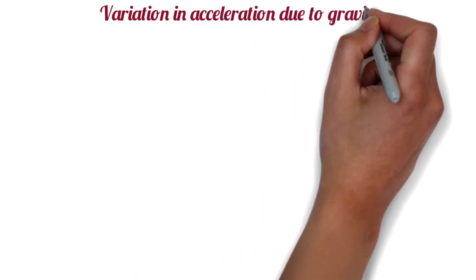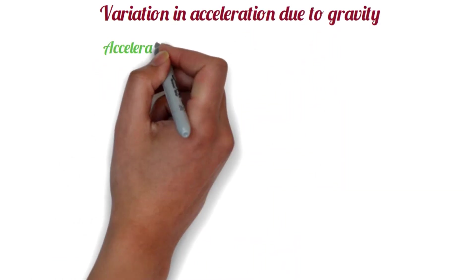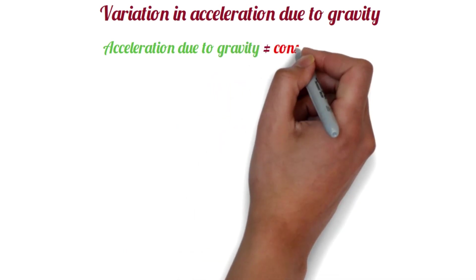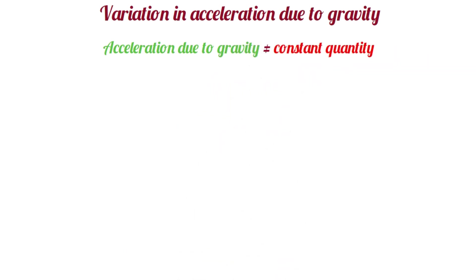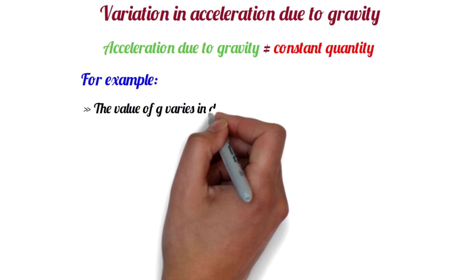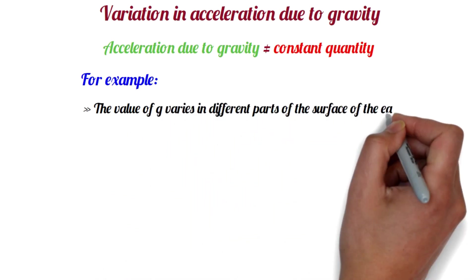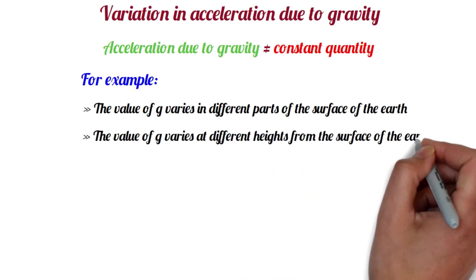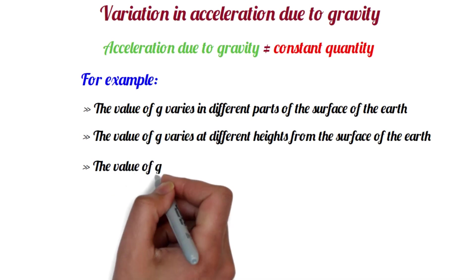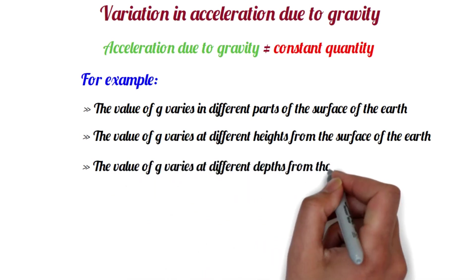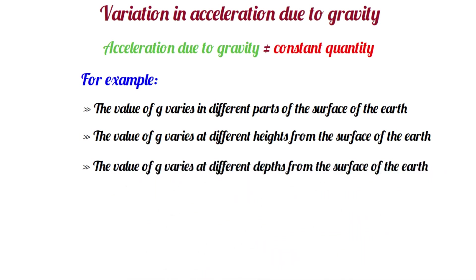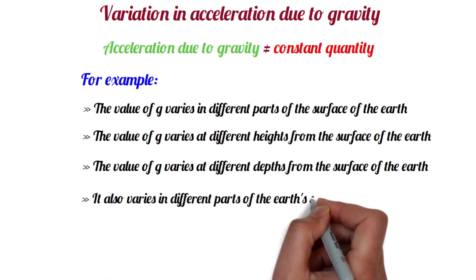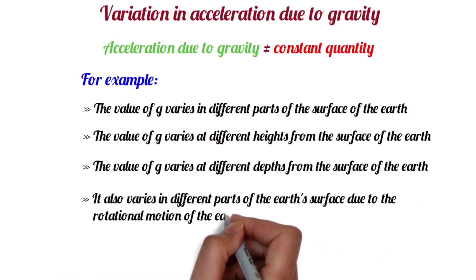Variation in acceleration due to gravity. Acceleration due to gravity is not a constant quantity. Its value changes for various reasons. For example, as the Earth is elliptical, the value of g varies in different parts of the surface of the Earth. The value of g varies at different heights from the surface of the Earth. Similarly, the value of g varies at different depths from the surface of the Earth. It also varies in different parts of the Earth's surface due to the rotational motion of the Earth.